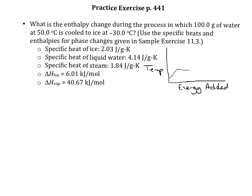Then we have a horizontal line while we are melting the substance, followed by another sloped line while we're heating up the liquid. Once the liquid reaches its boiling point, we have another flat line as we phase change from liquid to gas. The last part of the curve is where we increase the temperature of the gas. So this upper region represents gas, the middle is liquid, and the solid is at the bottom.